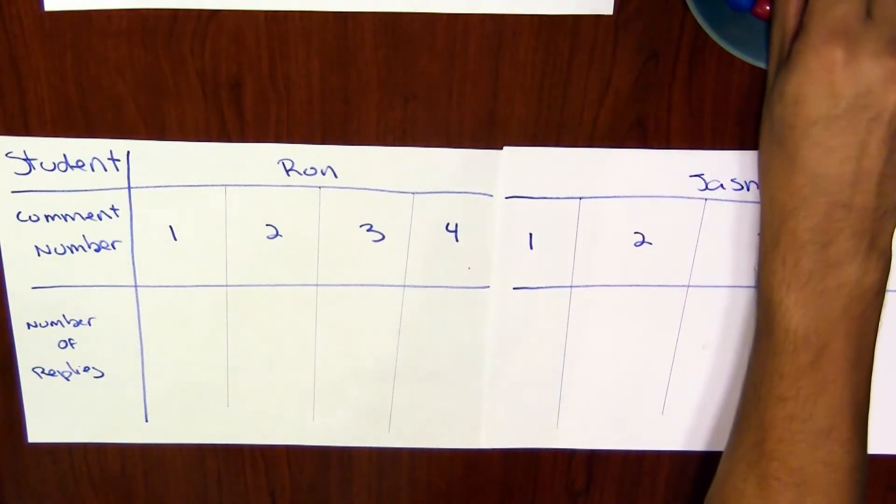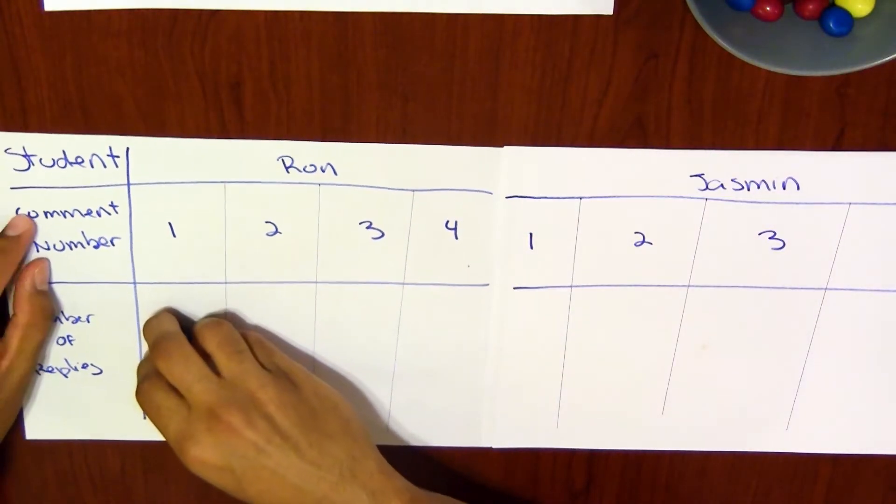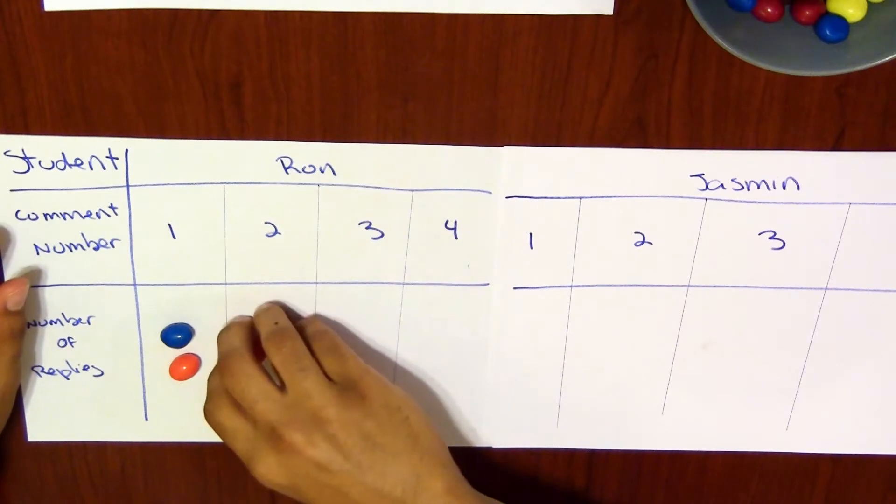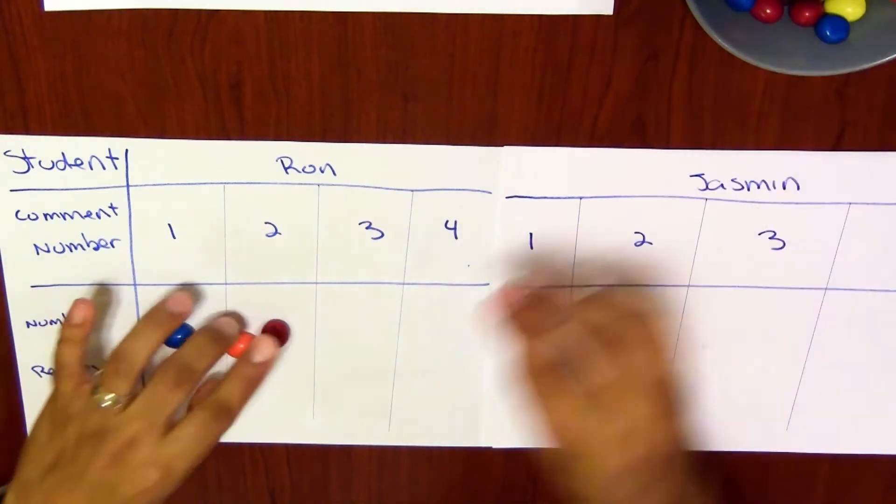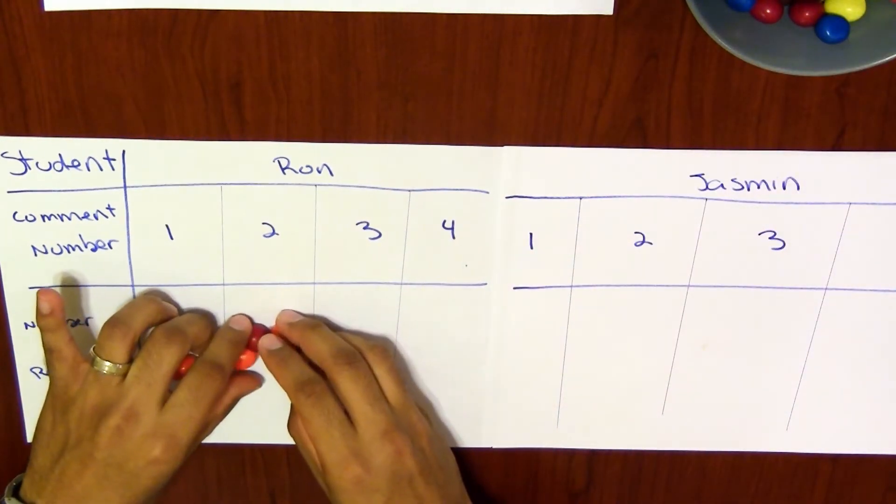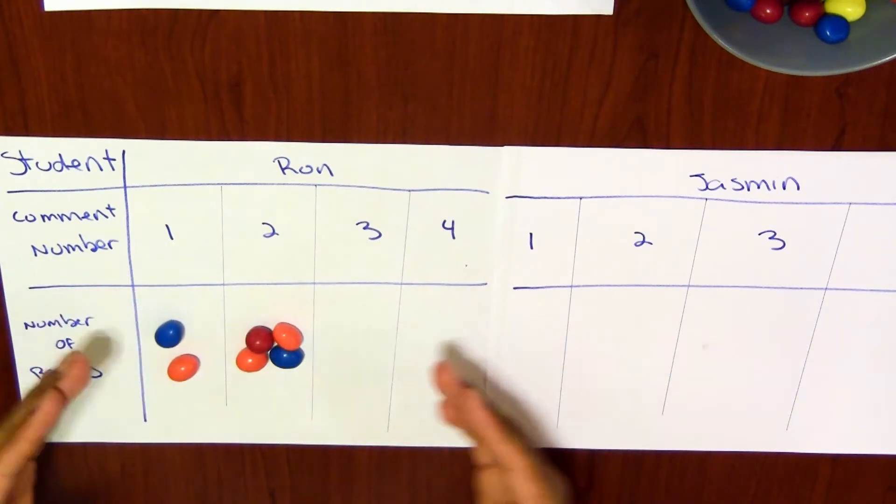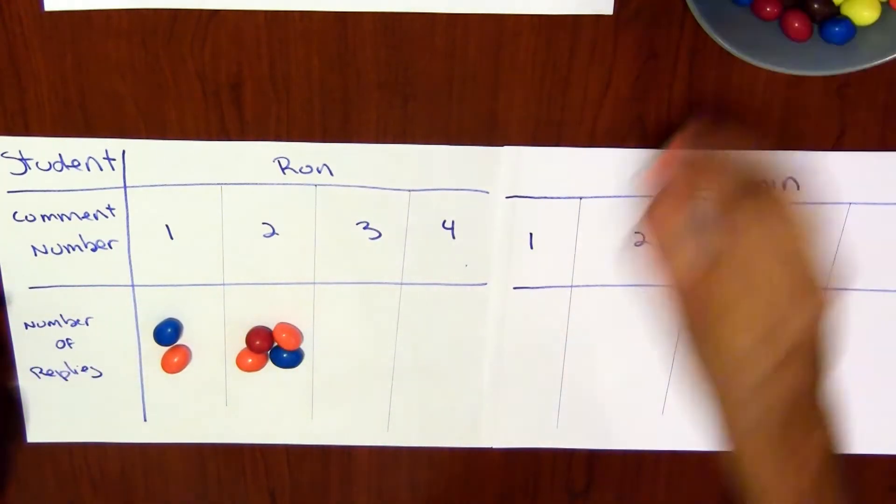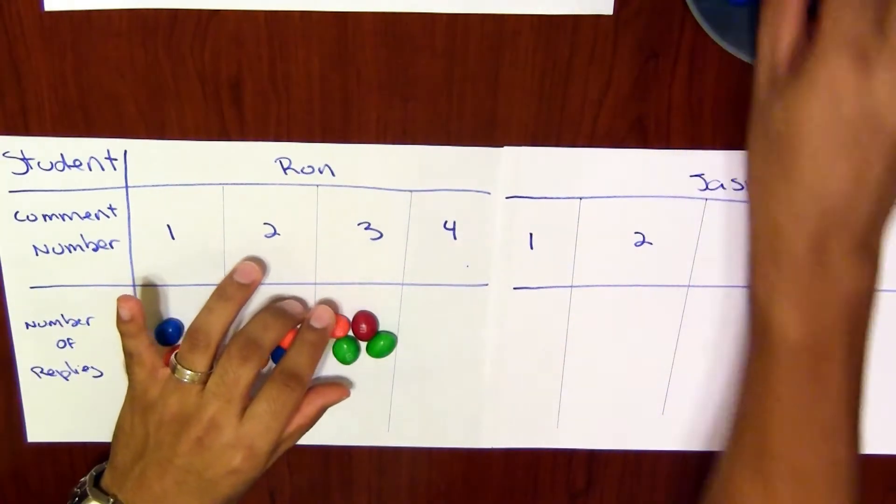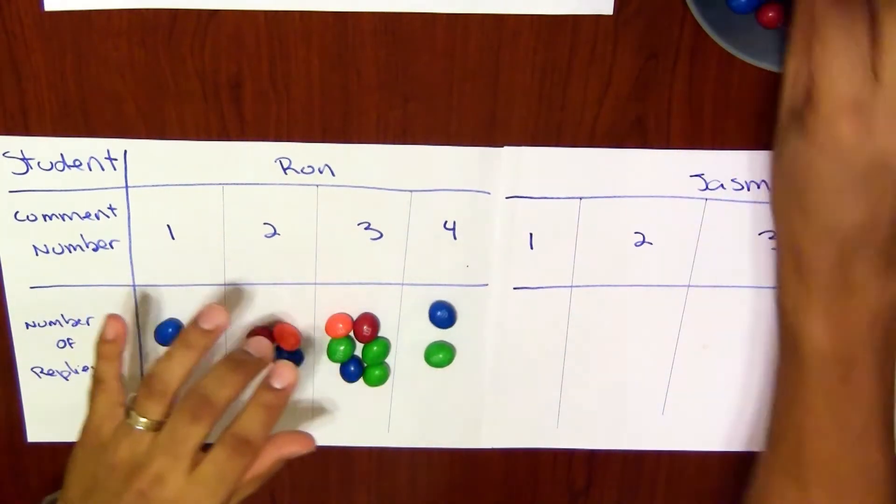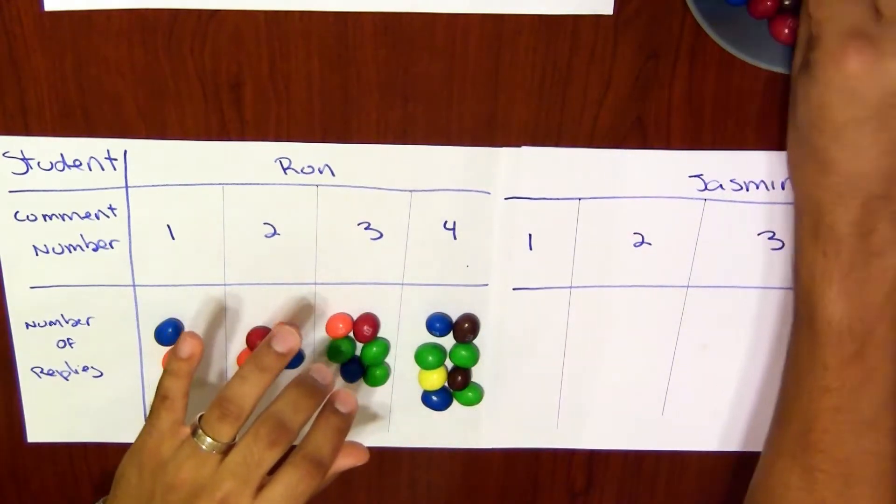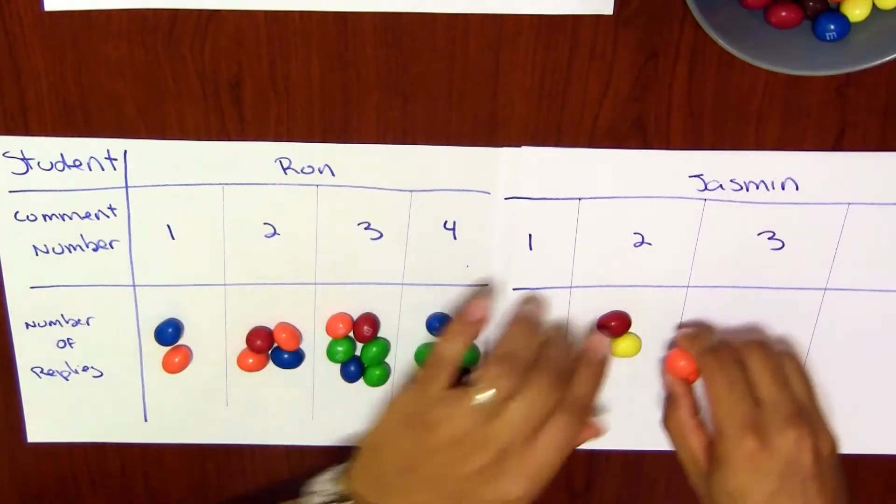All right, so we said that Ron had two replies in his first comment, so two M&Ms for him here. Four replies in his second comment. By the way, if you get the regular M&Ms they don't roll around like this with the peanut ones.